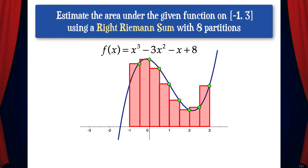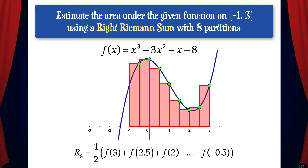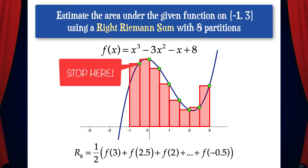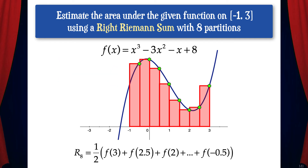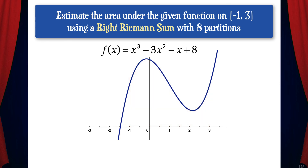Now let's estimate the area under the given function using a right Riemann sum with 8 partitions. We already found delta x from the previous problem, so we just need to determine the function values to add. In this case, we're going to start at f of 3 and go backwards, incrementing by 0.5 until we get to f of negative 0.5, because that's the right side of the last rectangle. Note the notation R sub 8, where R means right Riemann sum and 8 means 8 partitions.